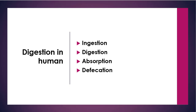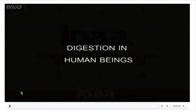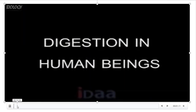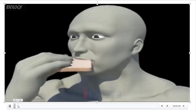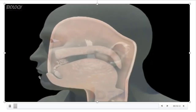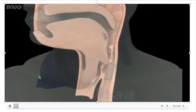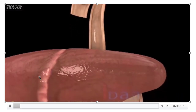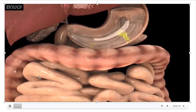Now I want to explain digestion in humans. The complete digestion process takes place in four stages: ingestion, digestion, absorption, and finally defecation. Ingestion means taking the food in. How food travels in our alimentary canal — through which parts the food material passes in our digestive system.